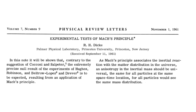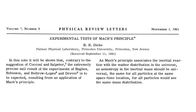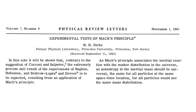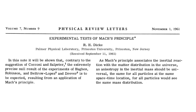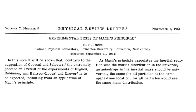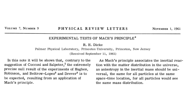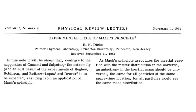Robert Dicke, co-author of the Jordan-Brans-Dicke theory, argued against Cocconi and Salpeter, claiming that in a relativistic model following Mach's principle, a tensorial inertial mass anisotropy would be the same for all particles, and due to universality it would be unobservable locally. Consequently, the null result tests on the anisotropy of inertia could not be used to refute the validity of Mach's principle.